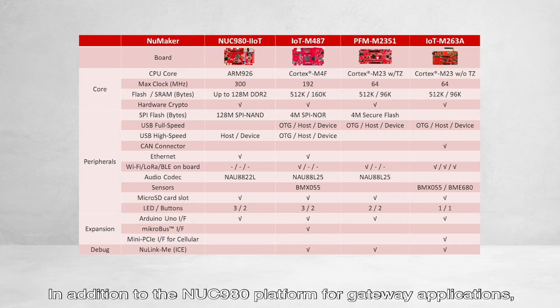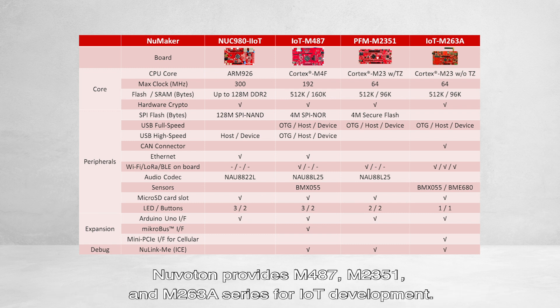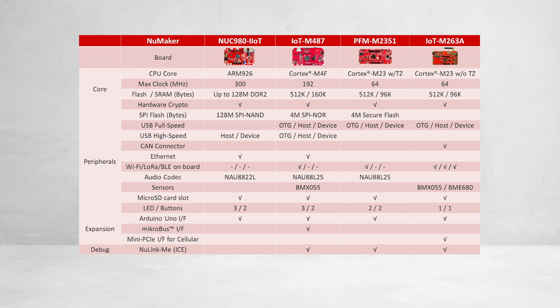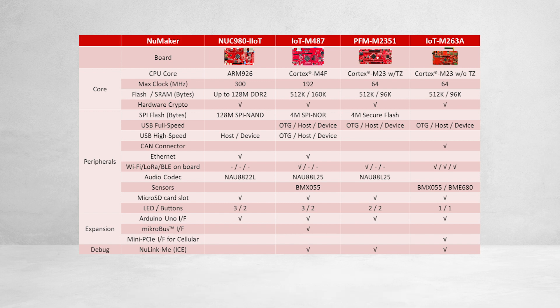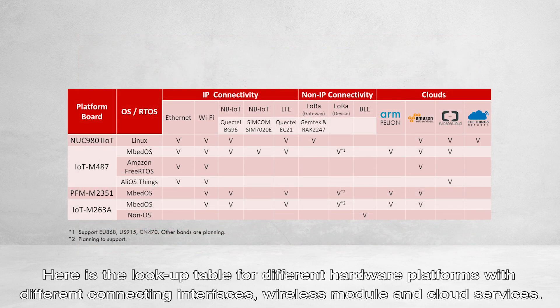In addition to the NUC980 platform for gateway applications, Nuvoton provides M487, M2351, and M263A series for IoT development. You can choose the platform depending on your product requirement. Here is the lookup table for different hardware platforms with different connecting interfaces, wireless modules, and cloud services.